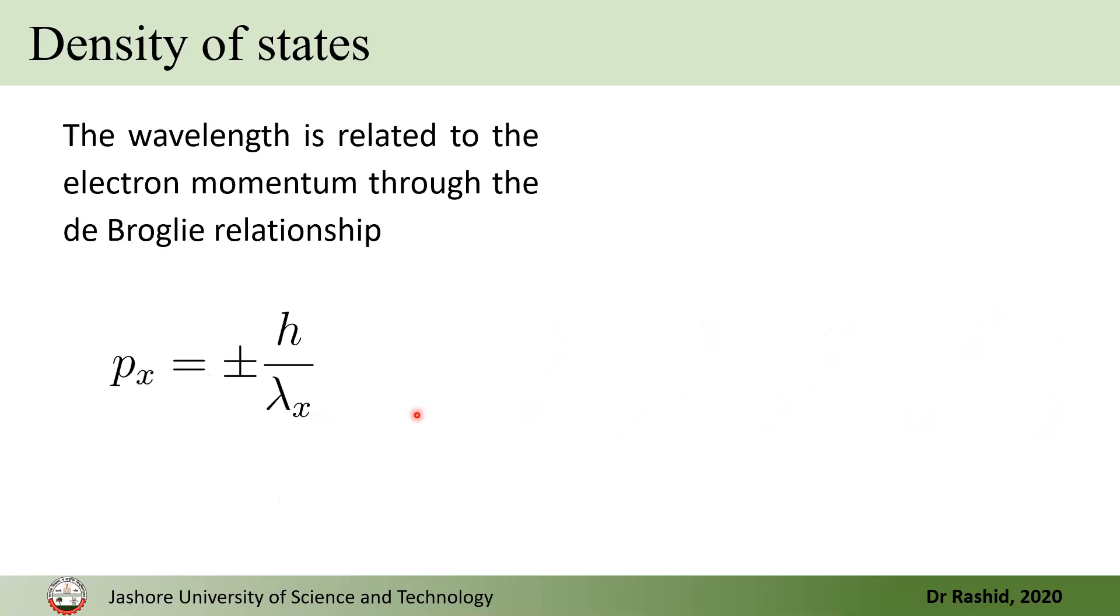Now, from the de Broglie hypothesis or de Broglie relation, we know that momentum is related to the wavelength with this expression. Here, the plus minus is to include both the directions. Now, we have written it here for Px, that is the x component of momentum, but this is true for y component and the z component of the momentum also.